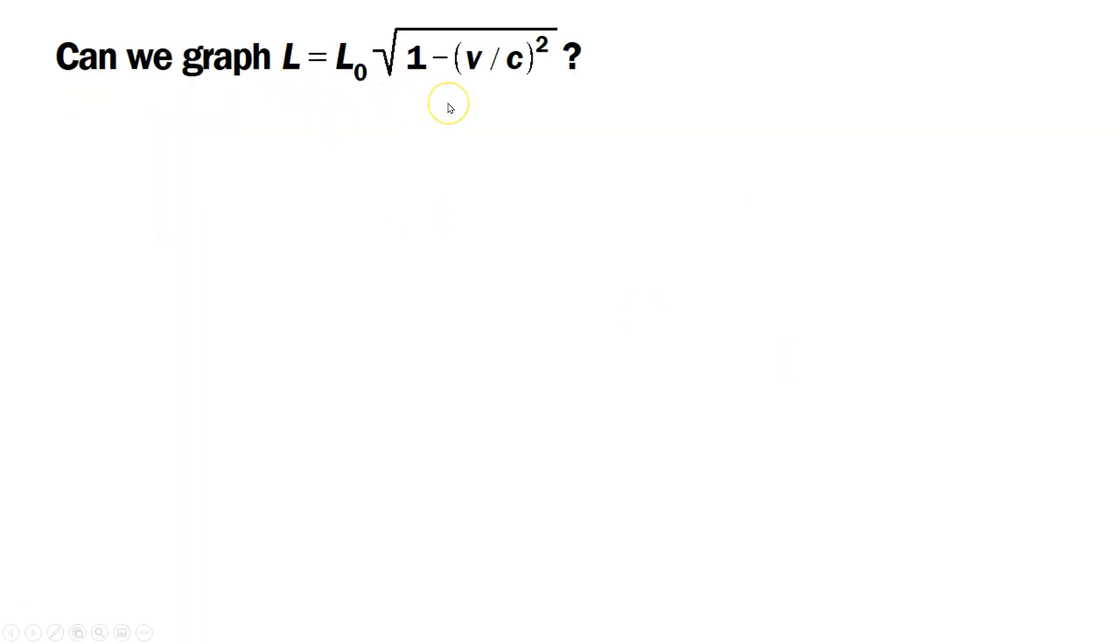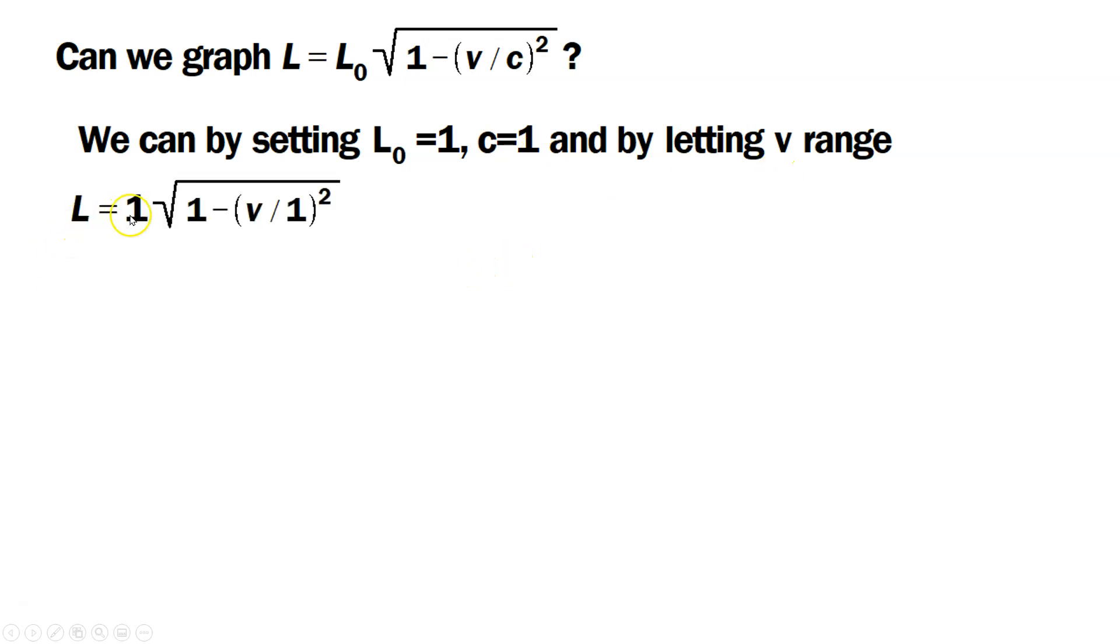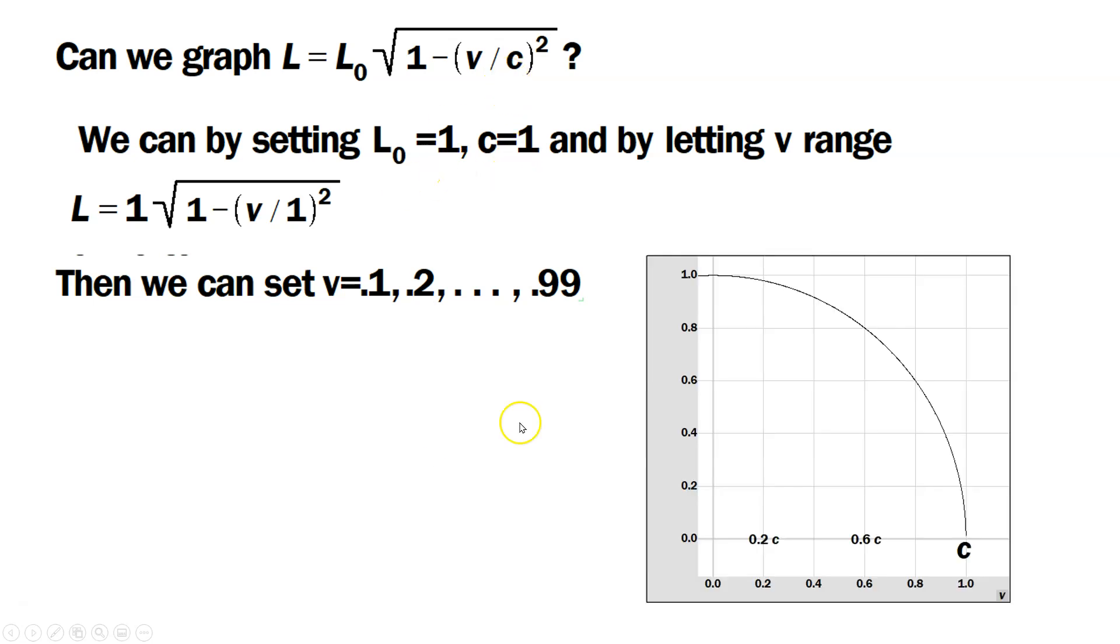Can we graph this quantity to understand this behavior better? We can by setting L₀ equal to 1 unit and c equal to 1, and by letting v range. In other words, L equals the square root of 1 minus (v/1)². There's nothing special about 1, but 1 makes it simple. Then we can set v to 0.1, 0.2, up to 0.99. The 0.1 really means 10% of the speed of light, 0.2 means 20% of the speed of light, 0.99 would be 99% of the speed of light, because we've decided to set c equal to 1.